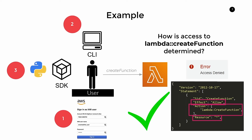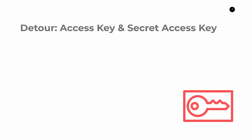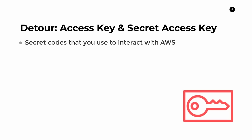In all three cases, AWS needs to know who you are as a user and what policies are associated with you. To answer that, I want to take a brief detour to talk about access keys and secret access keys. Access keys and secret access keys are secret codes that you use to interact with AWS. When you create an account and go to the IAM section, you can get access to two string values — the access key and the secret access key — which are alphanumeric strings that you should keep very, very secret. They are essentially your username and password when interacting with AWS programmatically.